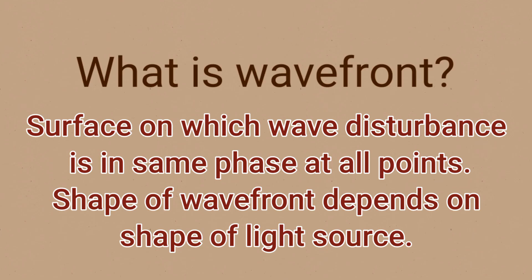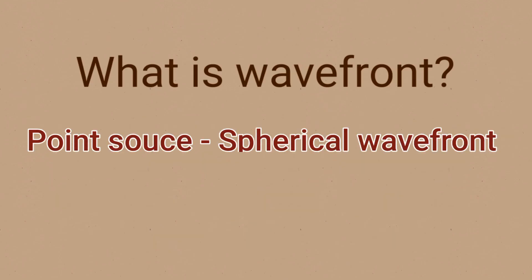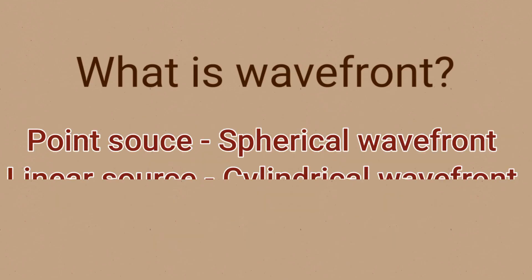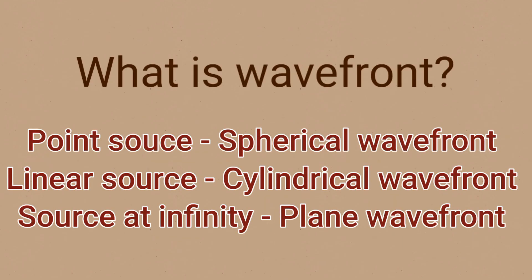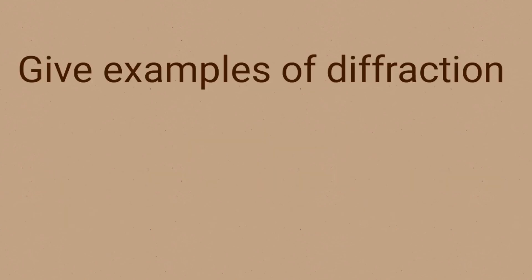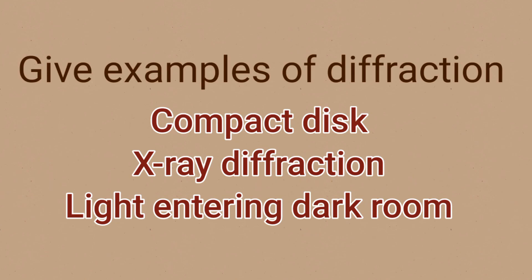What is a wavefront? A surface on which the wave disturbance is in the same phase at all points is called a wavefront. The shape of the wavefront depends on the shape of the light source: a point source gives a spherical wavefront, a linear source gives a cylindrical wavefront, and a source kept at infinity gives a plane wavefront.